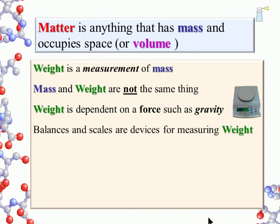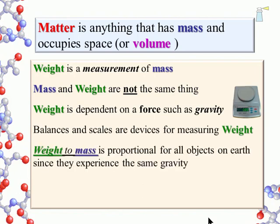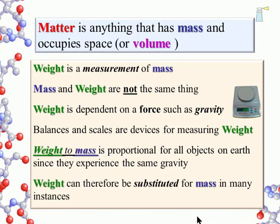Balances and scales are devices for measuring weight. Weight to mass is proportional for all objects on the earth since they experience the same gravity. Anything with twice the mass has twice the weight; they are directly proportional. And that allows us to use weight as a substitute for mass in many instances.